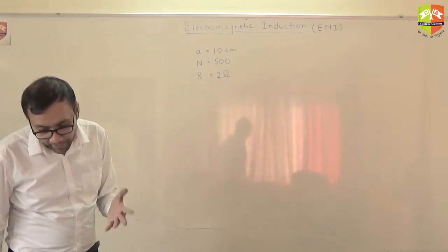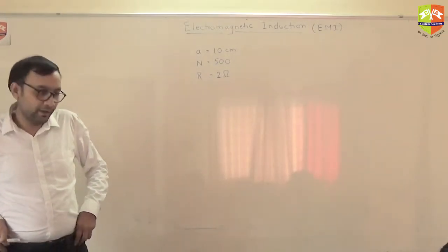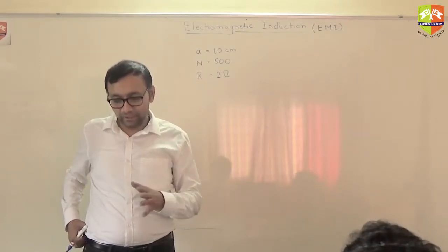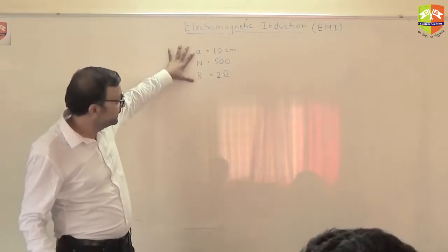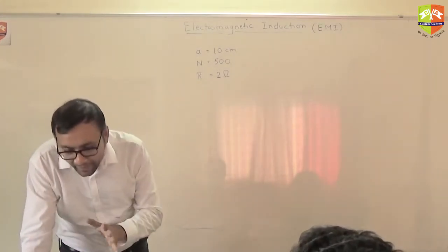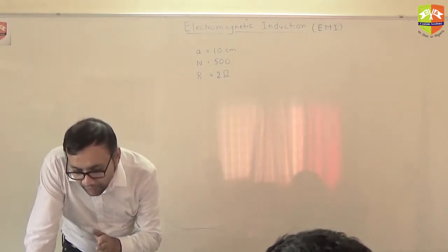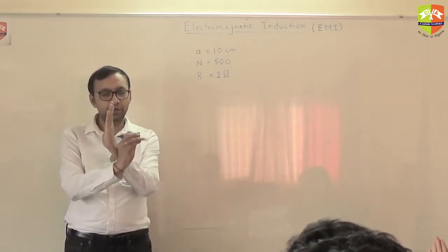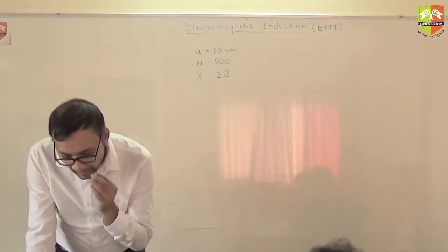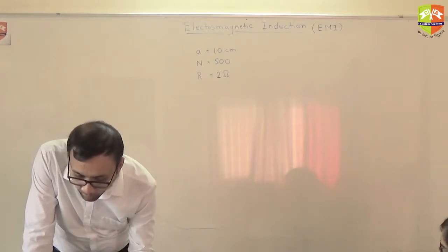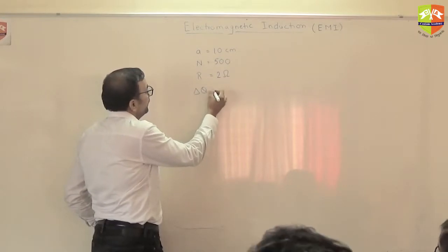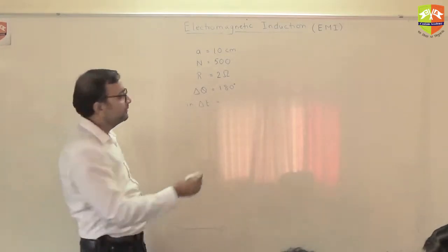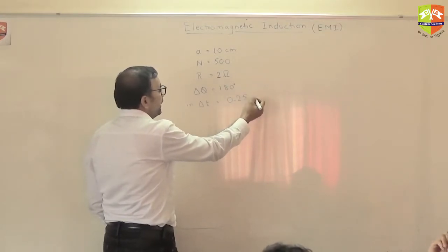It is placed with its plane perpendicular to the horizontal component of Earth's magnetic field. You don't have to write all that — just imagine what is happening. The data is this much, and it is placed perpendicular to the horizontal component of Earth's magnetic field, so it is placed like this — horizontal to horizontal. It is rotated about its vertical diameter through 180 degrees.